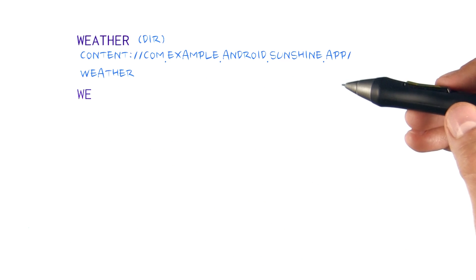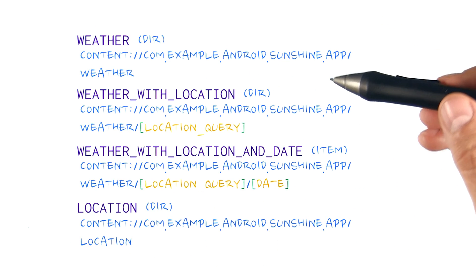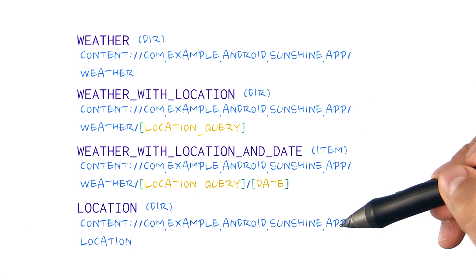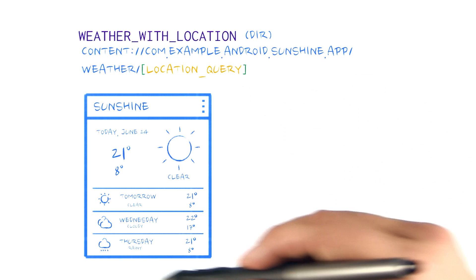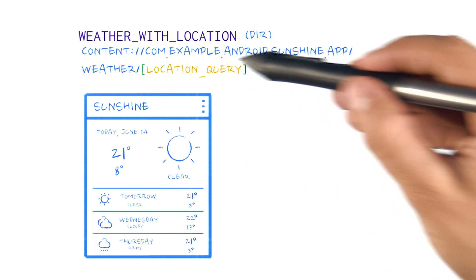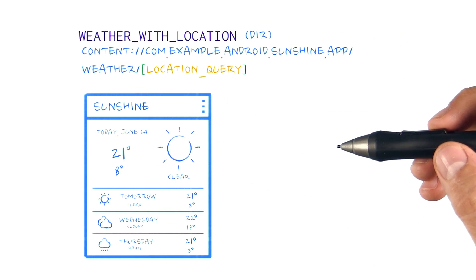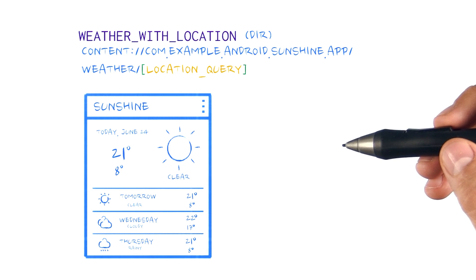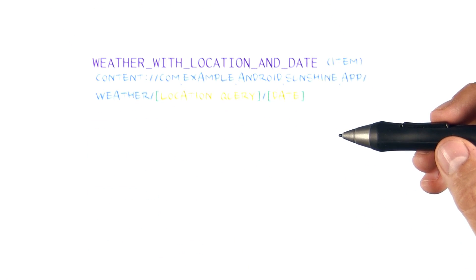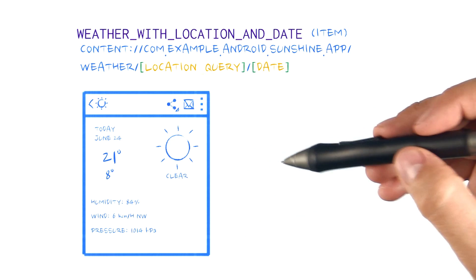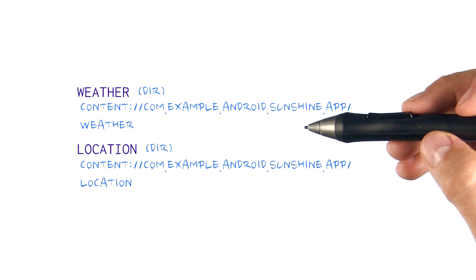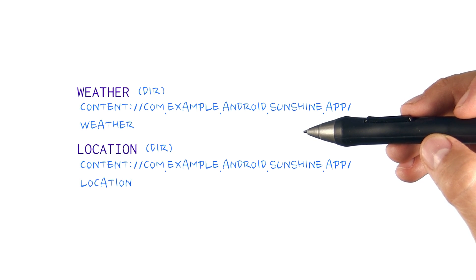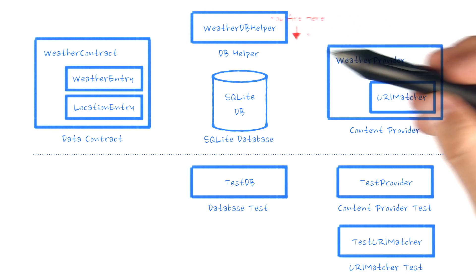So, defining URIs. To make it easy for us, I've defined the data URIs that we will be supporting. Some of these URIs exist because the UI has a view that needs to expose that particular data, such as weather with location, which will be used to display the main list of forecasts, and weather with location and date, which will be used to display the detailed forecast information. Others are used primarily for writing the database — inserts, updates, and deletes. Having these base URIs is also useful for testing.